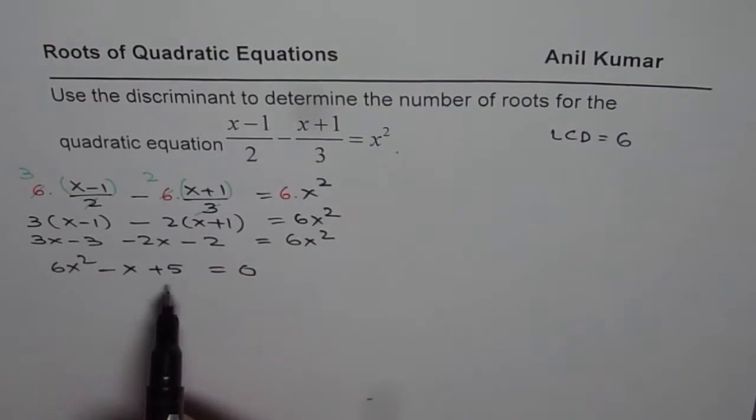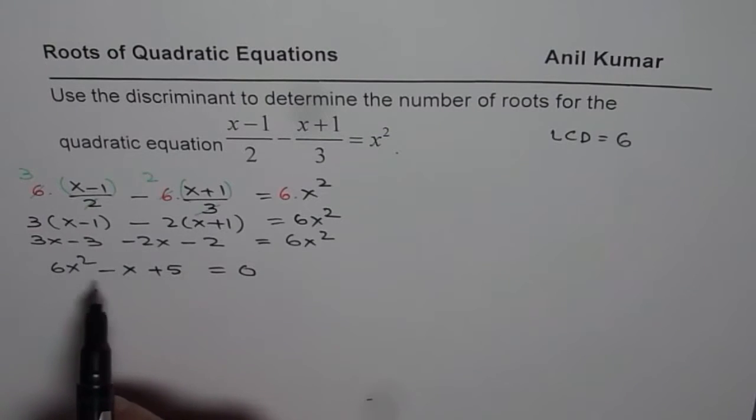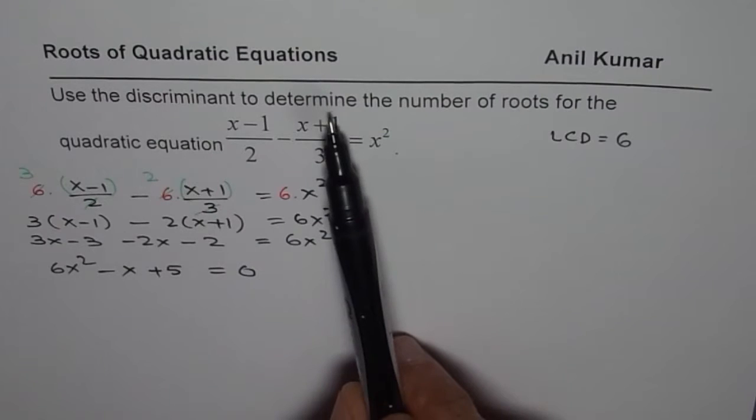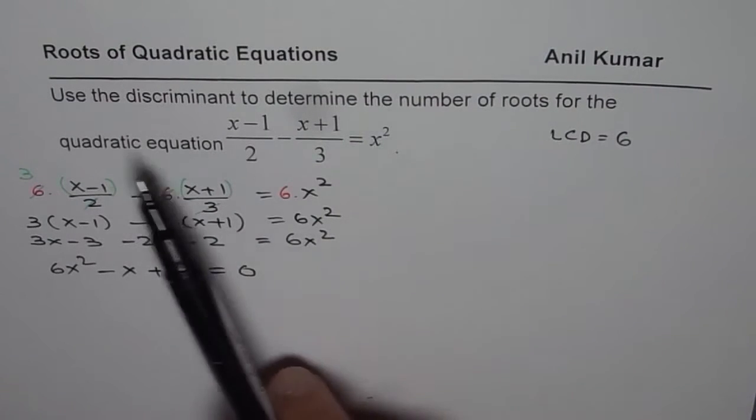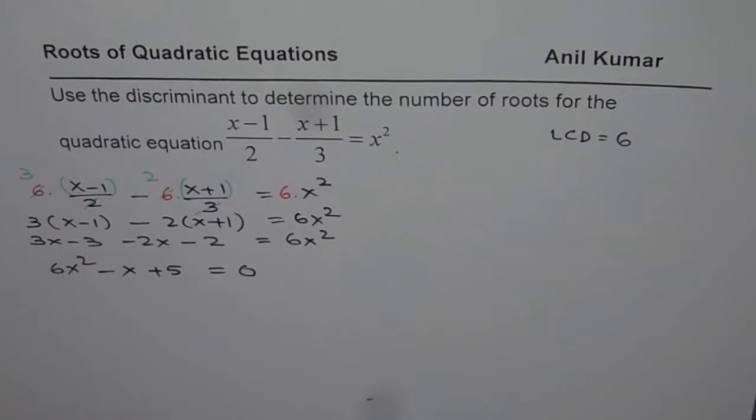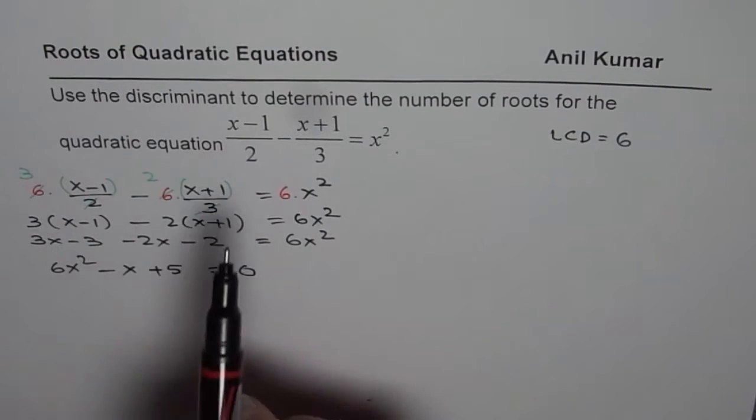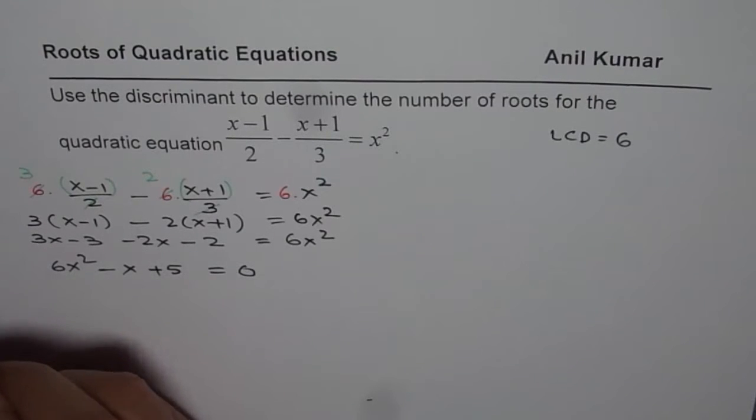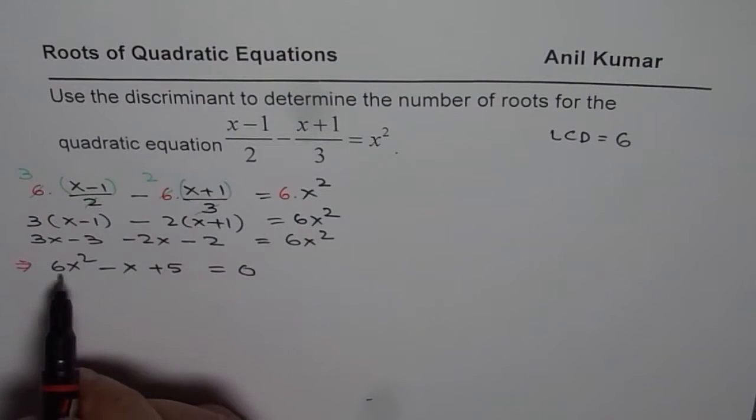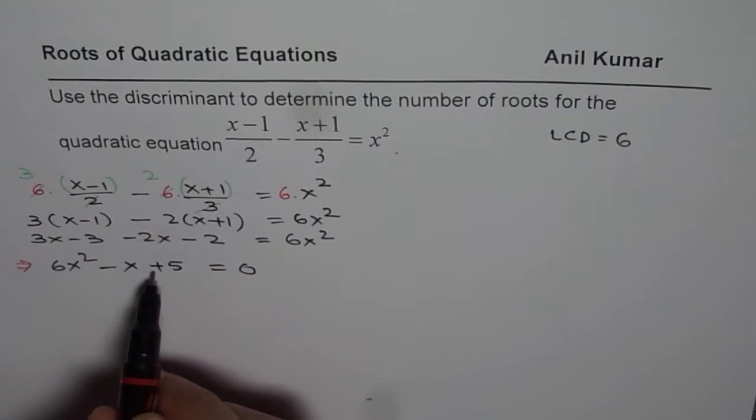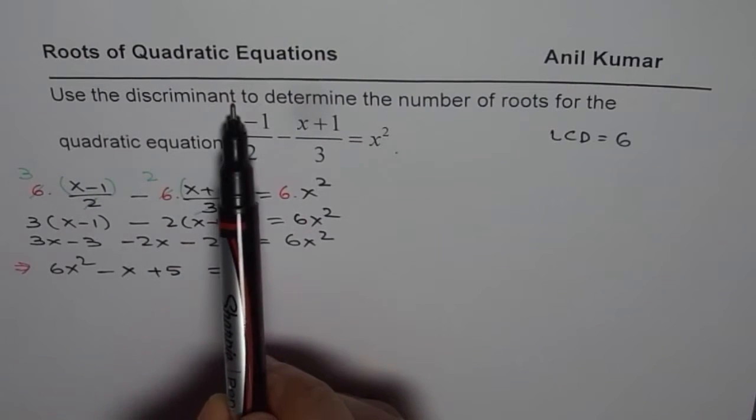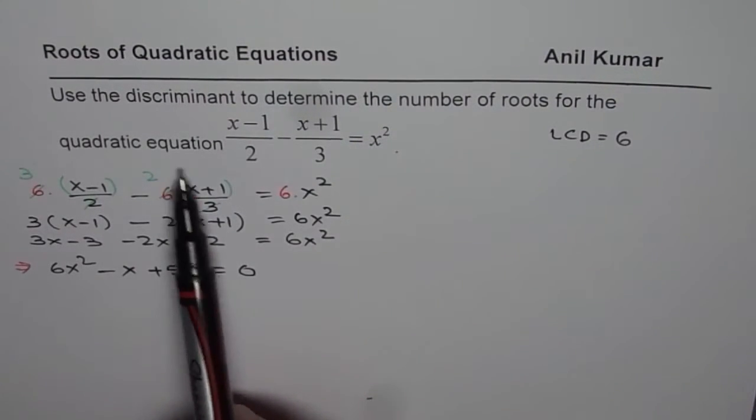Now we need to factor this. 6 times 5 is 30, and what you need is minus 1. Anyway, now we need to use discriminant to determine number of roots for the quadratic equation. So what we have now is the quadratic equation: 6x squared minus x plus 5 equals 0. The question is, use the discriminant to determine the number of roots.